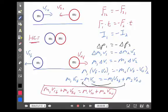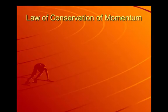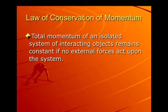We learned back before that whenever we hear total and constant, that must mean something. Must mean a conservation law, and this is called the law of conservation of momentum. The total momentum of an isolated system of interacting objects remains constant if no external forces act on the system.